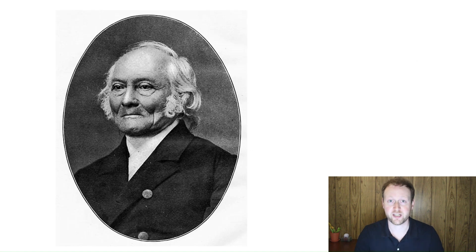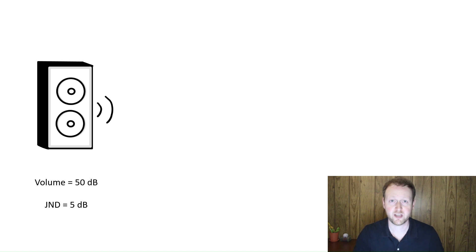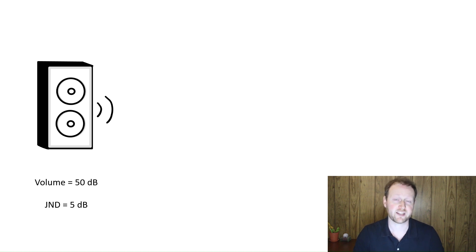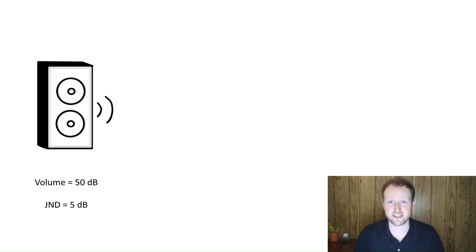This idea was formally put into an equation by Ernst Weber, and we now call it Weber's Law. Weber's Law simply states that the just noticeable difference between two stimuli is going to change as a proportion of those stimuli, as we've just described. For example, let's say we were running an experiment testing just noticeable differences, and we played somebody a sound at 50 decibels — decibels being the measurement unit for volume. Hypothetically, let's say we needed a 5 decibel change in order for the participant to say, yes, I can hear that you've changed the volume. So in this case, the just noticeable difference — the JND — is 5.